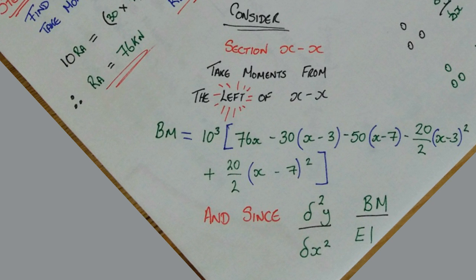Therefore the bending moment is equal to 10 cubed, 76X minus 30, X minus 3, plus 50, X minus 7, minus 20 divided by 2, times X minus 3 to the power of 2, plus 20 divided by 2, X minus 7, squared.